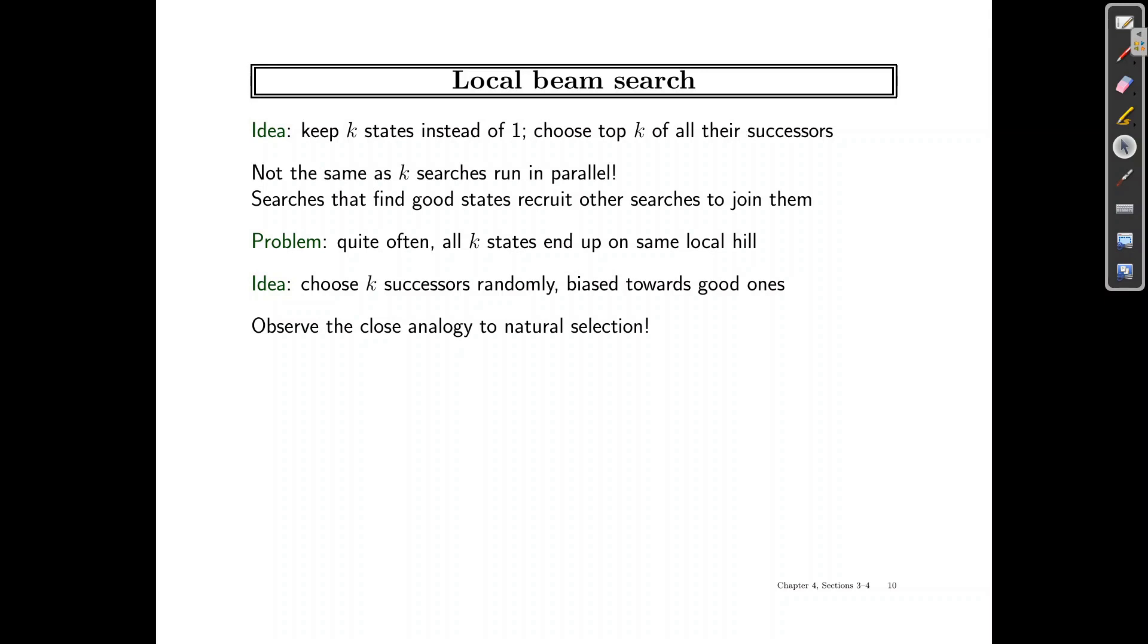So any searches which actually end up finding good results, good states, they actually recruit other searches to join them. In local beam search, useful information is passed among the parallel search threads. So what happens is that it generates the best successors to say to the others, come over, the grass is greener. So the algorithm quickly abandons unfruitful searches and moves its resources wherever the progress is being made.